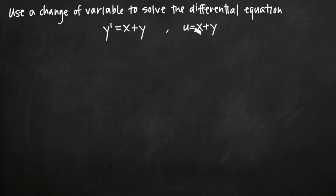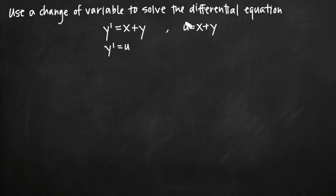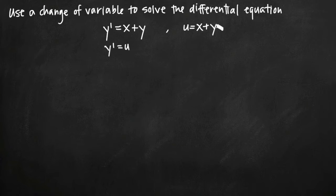If we notice that u equals x plus y, and we make that substitution, we get y' equals u. So the right hand side is taken care of — that's already in terms of u. We just need to get the left hand side in terms of u as well. The way that we'll do that is by manipulating our substitution, solving for y and then taking the derivative to make a substitution for y'.